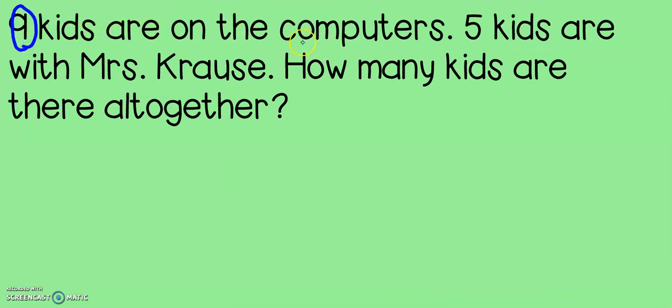Nine kids are on the computers. Five kids are with Mrs. Krause. How many kids are there all together? Now, let's think about that. We have two groups of kids: nine are on the computer and five are with Mrs. Krause. The question is, how many kids are there all together? When I hear the word all together, the first thing that pops into my mind is the words in all. That means the total. So, I want to find the total number of kids.